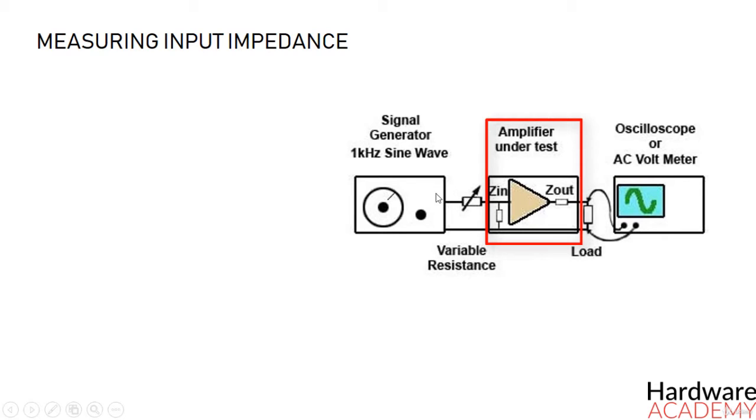So we have this square here which could be any circuit, and we want to measure its input impedance. Don't worry about this triangle for the moment—it's there just to illustrate that our circuit is a specific circuit which can amplify the input signal, typically used in audio circuits.